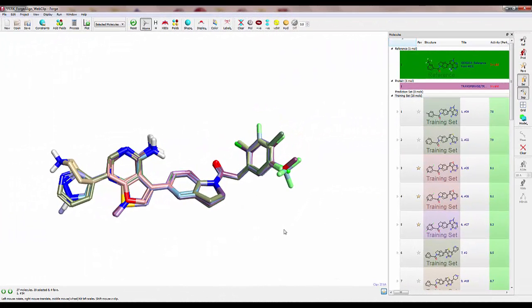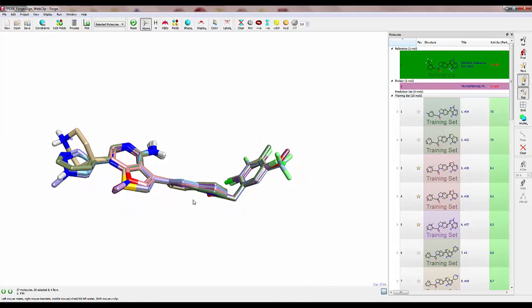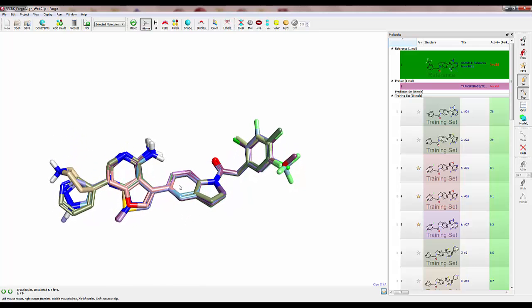Now that the MCS alignment has finished, we see that the alignment of the indoline core is much tighter along with much of the peripheral groups due to their common structural features.